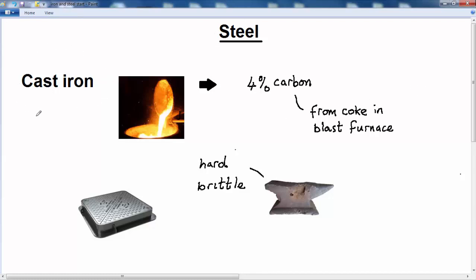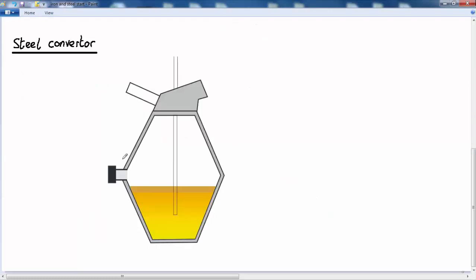To convert the cast iron to steel something called a converter is used. So this is a steel converter. We've got the cast iron from the blast furnace, and what's going to happen is that oxygen is going to be pumped into this liquid iron. So you've got oxygen being pumped into the molten cast iron under high pressure, and as it does so the oxygen is going to react with the carbon present in the iron to produce carbon dioxide and carbon monoxide gases, which are going to exit the converter here. So here we've got the waste gases.